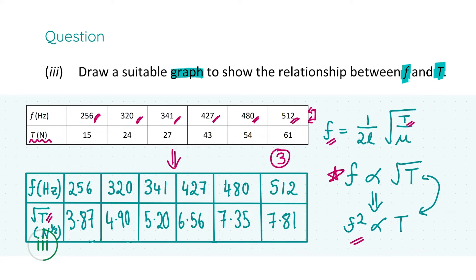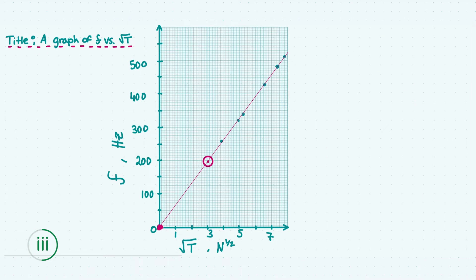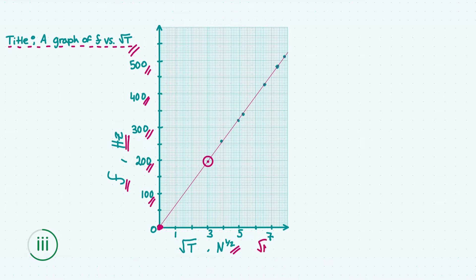Now let's move on to the actual graph. I've written down a title, which is a good idea so the examiner can see what you're plotting. Your first three marks go for properly labelling your axes. Label them with the variable, its unit, and scale them properly, evenly and consistently. The unit for √tension is Newton to the power of half (√N), since tension is a force measured in Newtons.